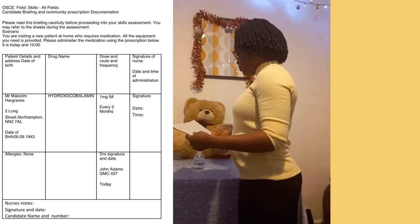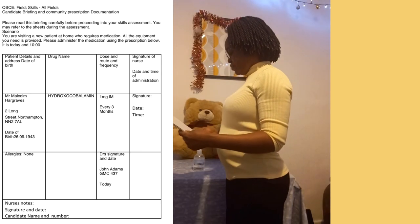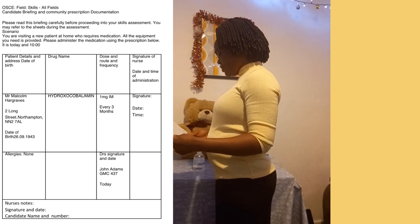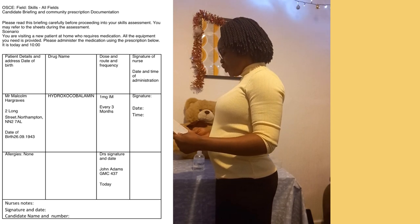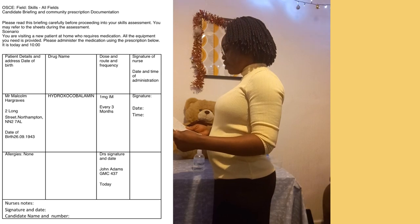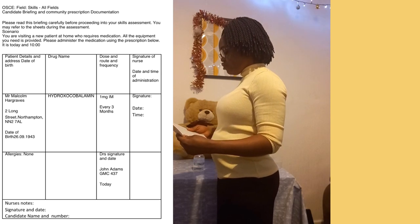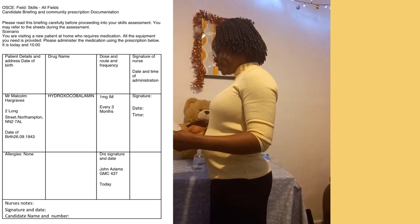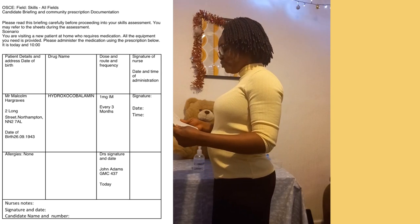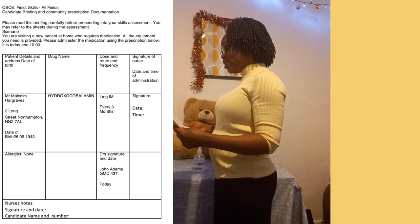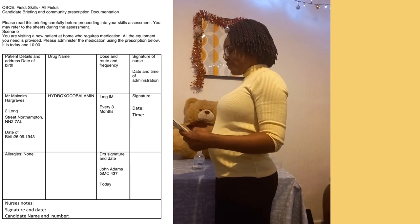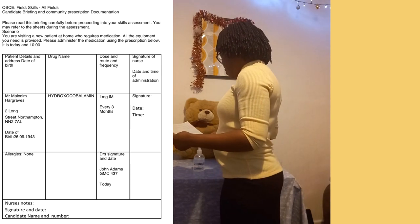My name is Malcolm Hargraves. Your date of birth please? 26/9/1943. Thank you very much. I have confirmed I am with the right patient, Mr. Malcolm Hargraves, date of birth 26/9/1943, and your address is 2 Long Street, Northampton — is that correct? Yes. Thank you very much. Is it okay if I call you Malcolm? Of course, nurse.